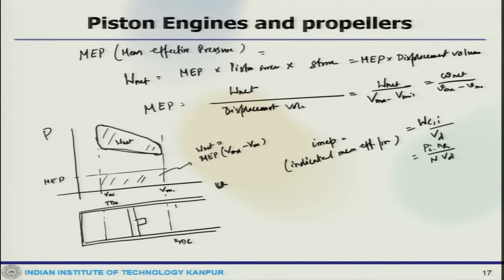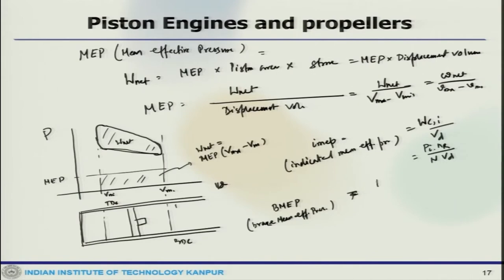Now, if brake work is used, then Brake Mean Effective Pressure (BMEP) can also be written as P_B N_R by N V_D. Both mean effective pressures are related: BMEP equals eta_M times IMEP, where eta_M is the mechanical efficiency of the shaft.